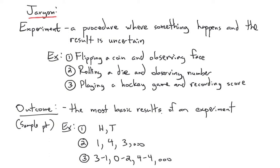So that's an experiment. And we call outcomes the results of those experiments. The most basic results. So outcomes for flipping a coin are heads and tails. Some outcomes for rolling a die. Well, you can get a one. You can get a four. You can get a three. You can get a two, a five, or a six as well.